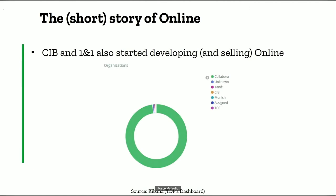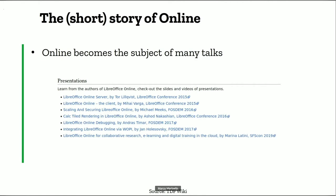CIV, which as we now know was spun off as Allotropia — and it's an honor for me to speak next to Torsten and the Allotropia team — also started developing and selling Online. You can see a map of the organizations contributing to the Online repository at TDF's infrastructure from the Kibana dashboard. Online became the subject of many talks; on the wiki page of LibreOffice Online you have a short list that will need to be updated after the talks of LibreCon this year. It was quite an interesting topic, last presented in 2019.